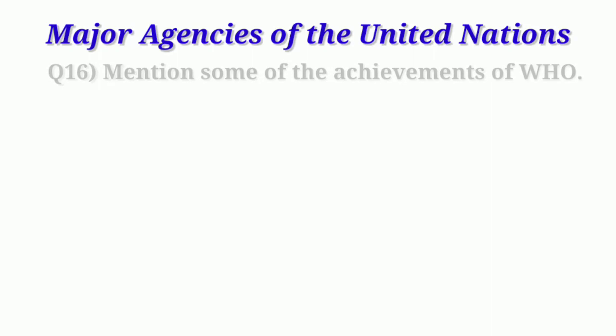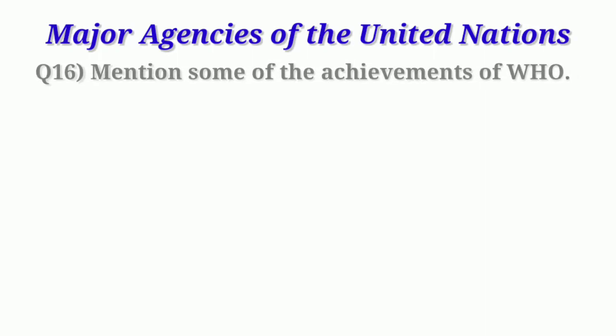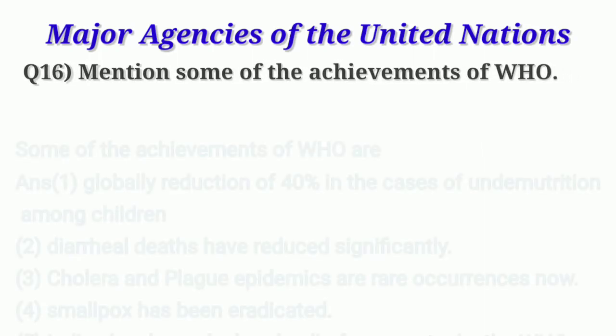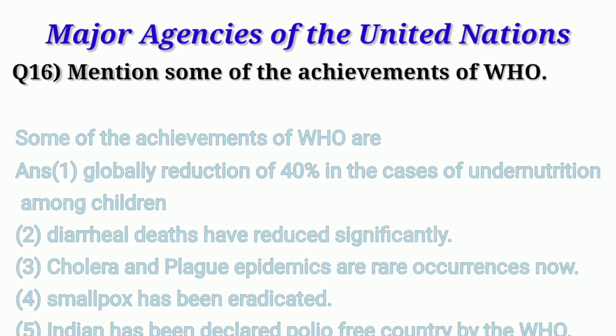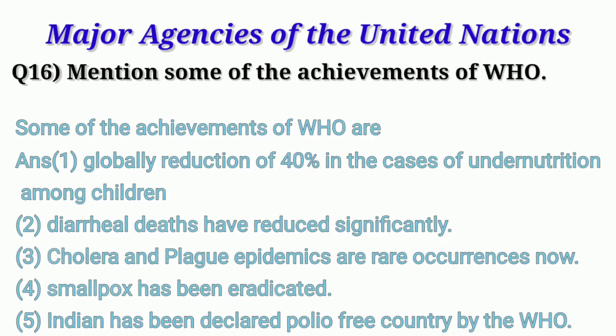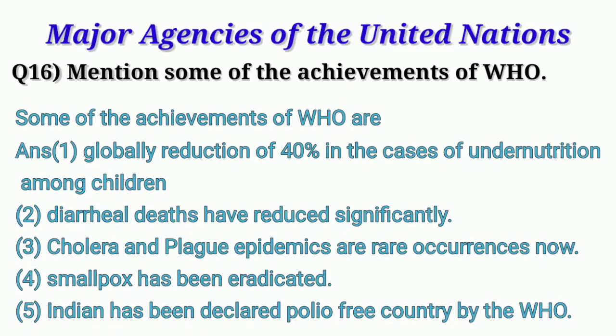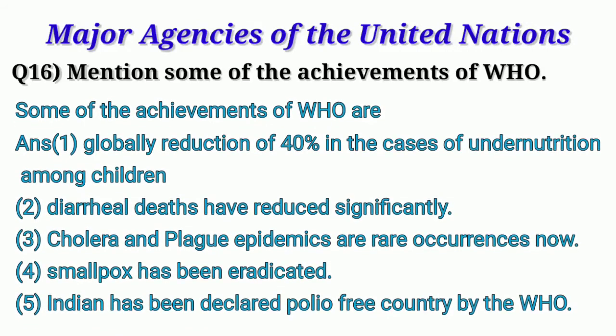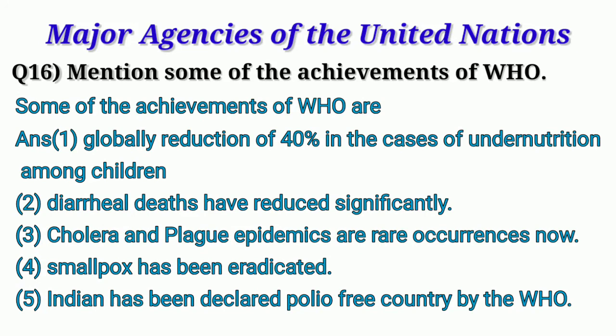Question 16: Mention some of the achievements of WHO. First, globally there has been a reduction of 40 percent in cases of under-nutrition among children. Second, diarrheal deaths have reduced significantly. Third, cholera and plague epidemics are rare occurrences now. Fourth, smallpox has been eradicated. Fifth, India has been declared a polio-free country by WHO.